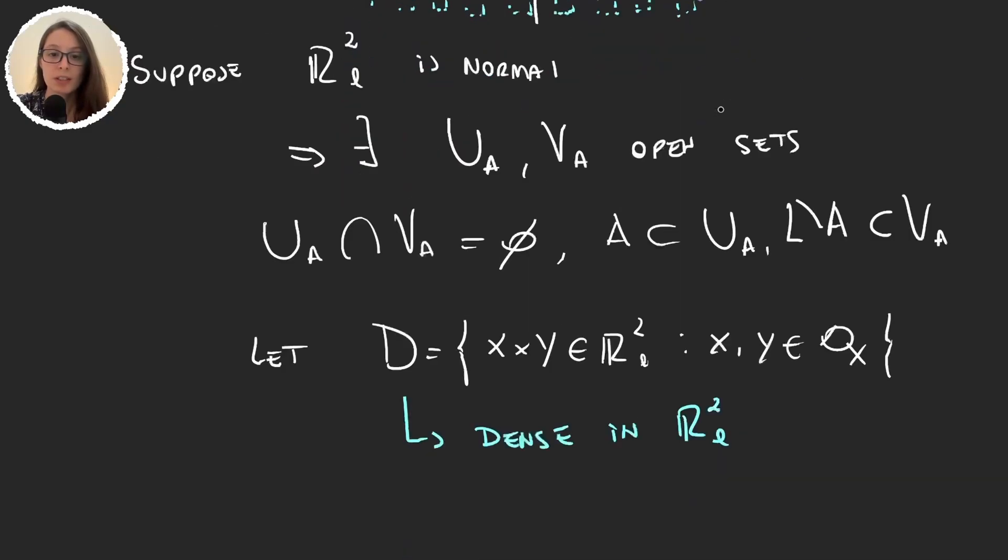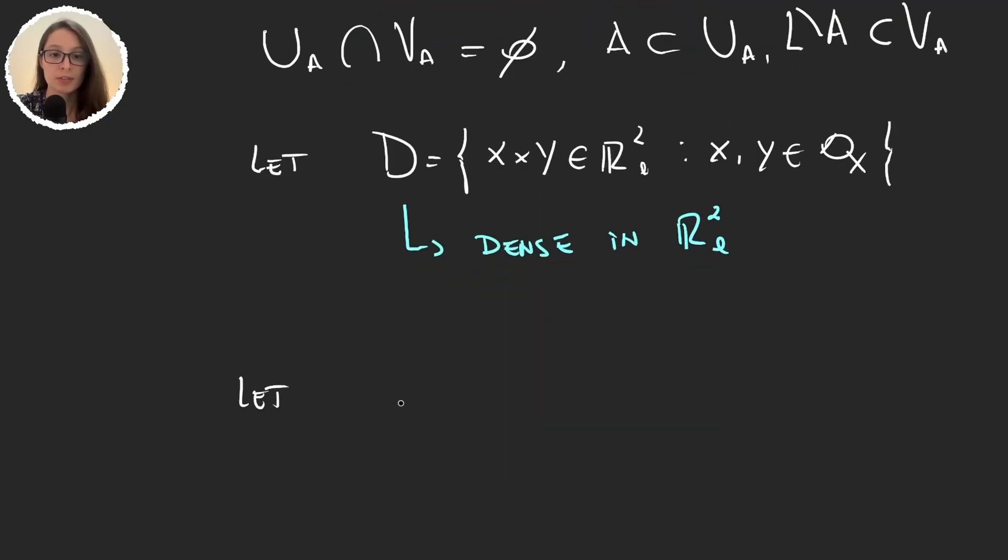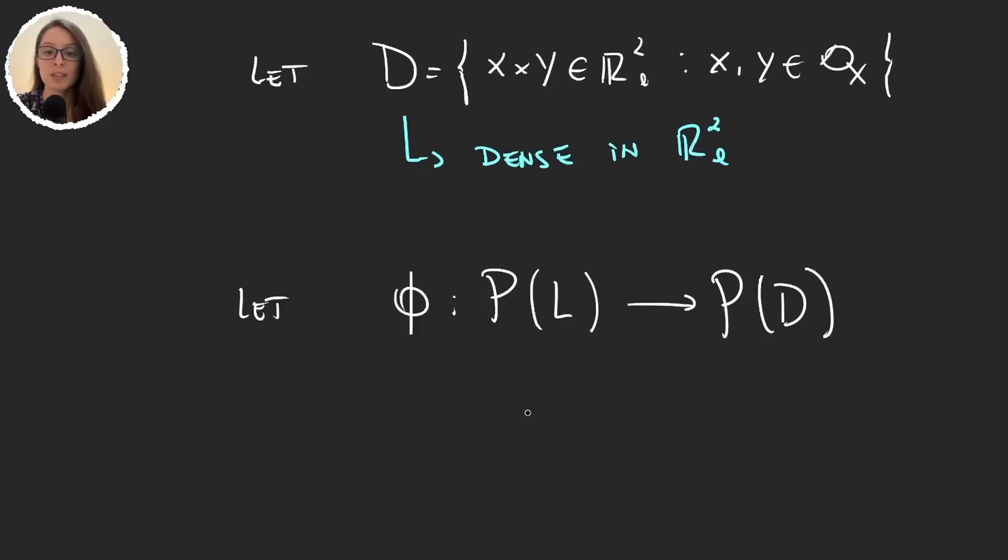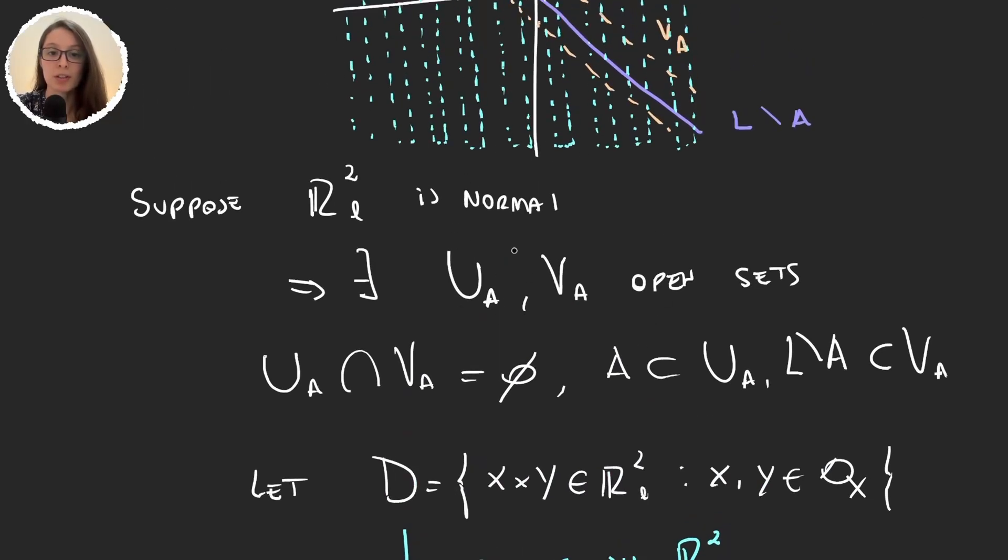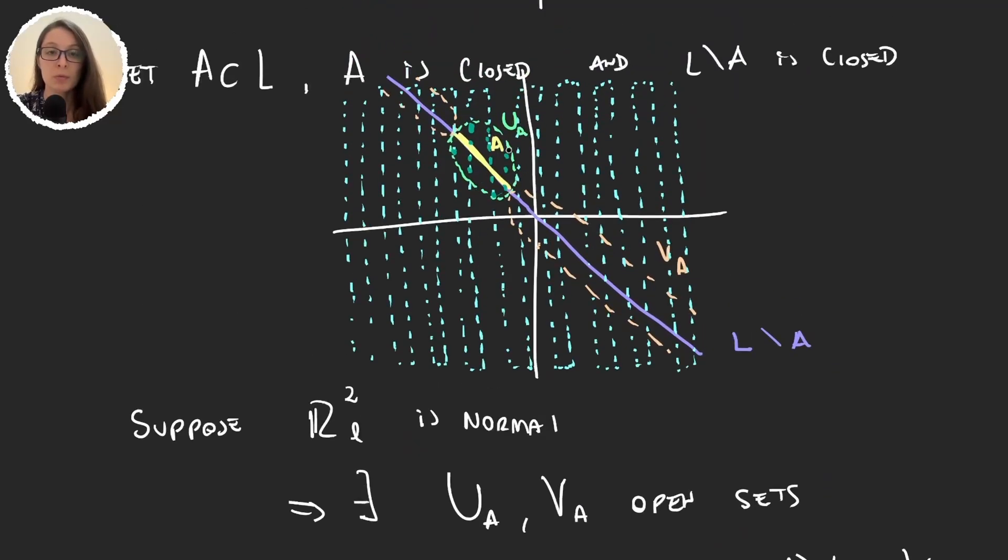And so we can think about what happens with these points in D that are also in UA. What we will do is create a function phi that will go from parts of L to parts of D. And the way this function will work is that it will give us for each A that's a subset of L, we know that we can do all these things and get this set UA, this neighborhood. So we will return, so the function will return for this set A this intersection of UA with the dense set.